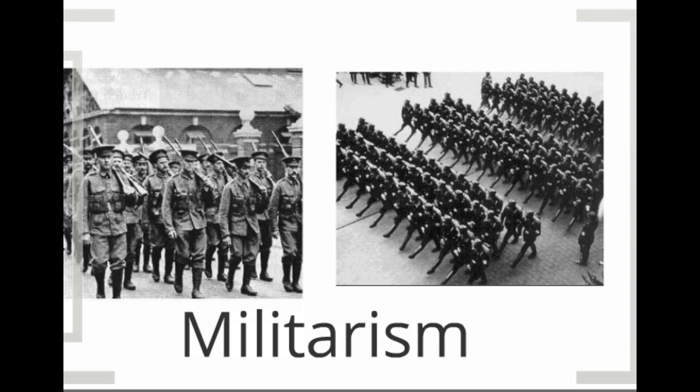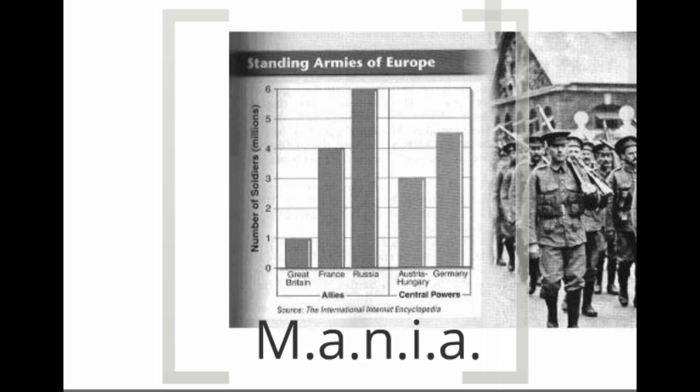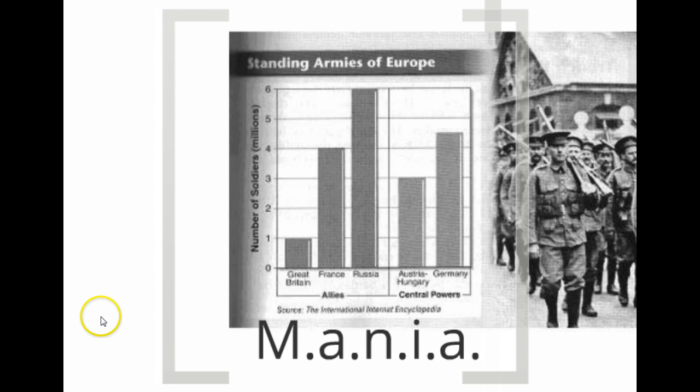The M stands for militarism. The nations of Europe were building up large armies. The numbers here indicate soldiers in millions: Great Britain had about a million, France about four million, Russia about six million, Austria-Hungary three million, and Germany about four and a half million. When these armies come together to clash, we're talking the better part of 17 million people fighting in this war. So M is for militarism.